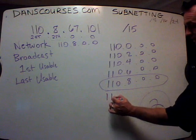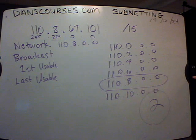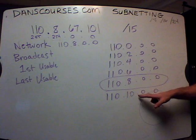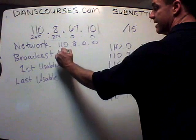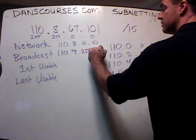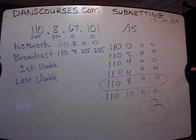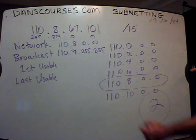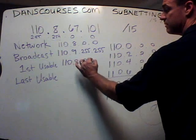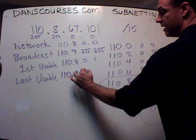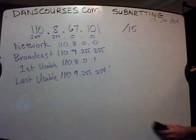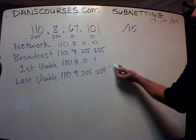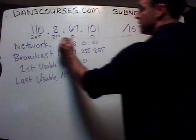The next network is going to be 110.10.0.0. If that is the next network, then the last address before it — the broadcast address — would be 110.9.255.255. The first usable host is 110.8.0.1, and the last usable host is 110.9.255.254. And that's how you find the network address, the broadcast, the first usable host, and the last usable host from this scenario.